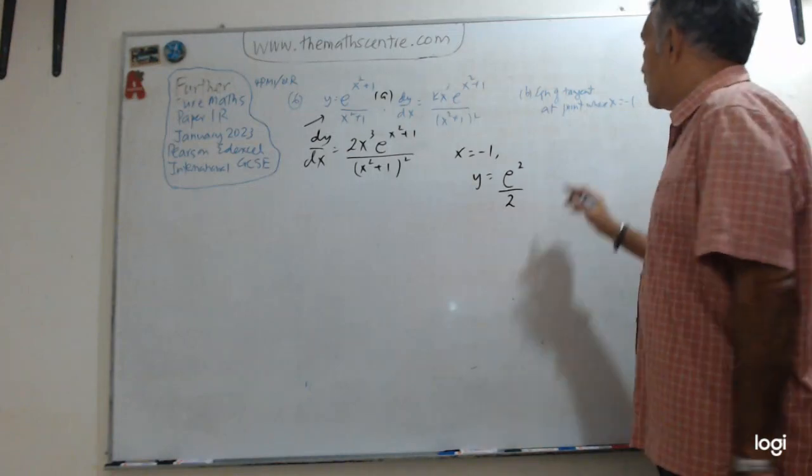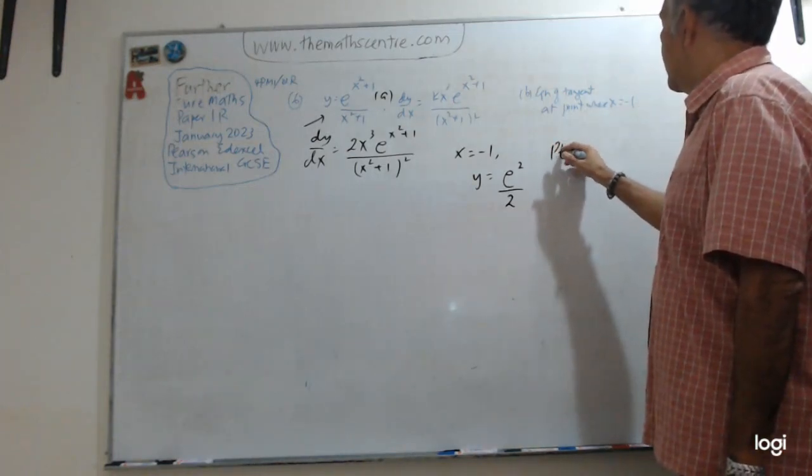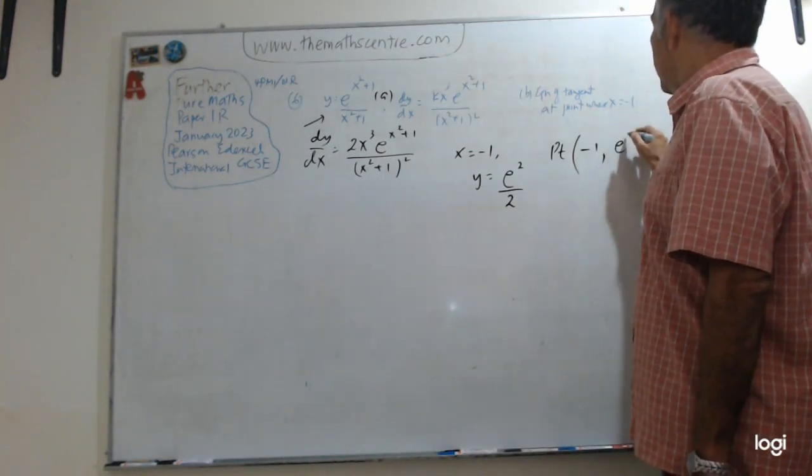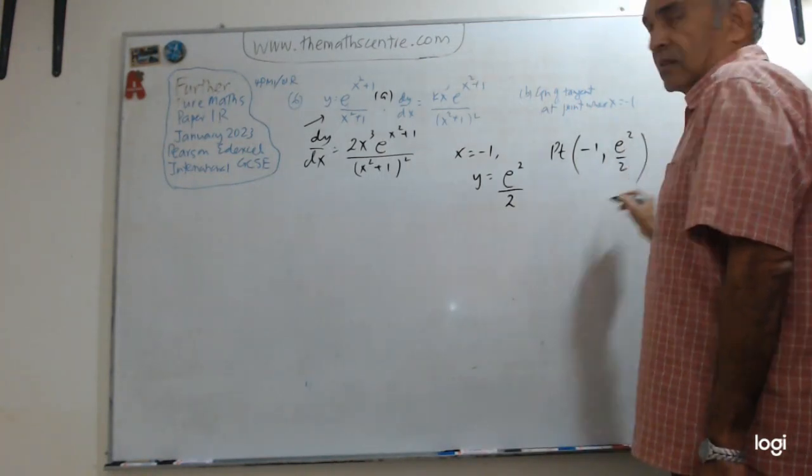So my point, the point at which we are trying to find the equation of the tangent, is (-1, e²/2).